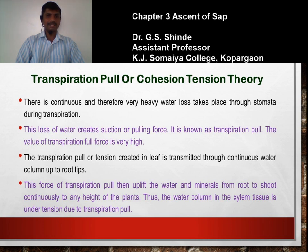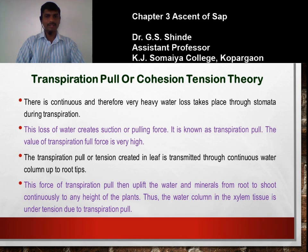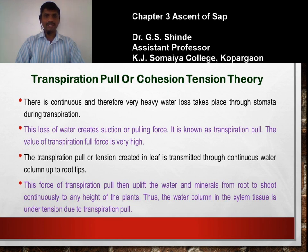There is continuous and heavy water loss through the stomata during transpiration. Transpiration is the loss of water in the form of vapors from the aerial part of the plant, mainly through the leaves. Stomata are small pores or openings present on the surface of leaves through which water escapes into the outer atmosphere as vapors. This continuous and heavy water loss through stomata creates a suction or pulling force known as transpiration pull.